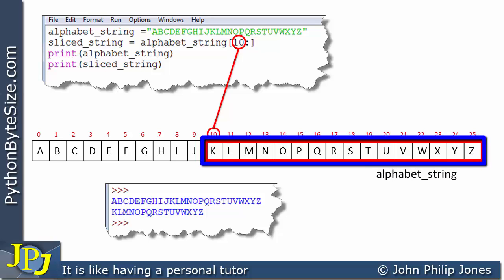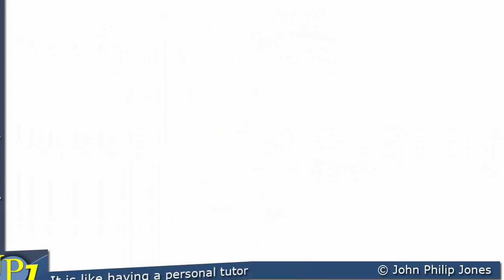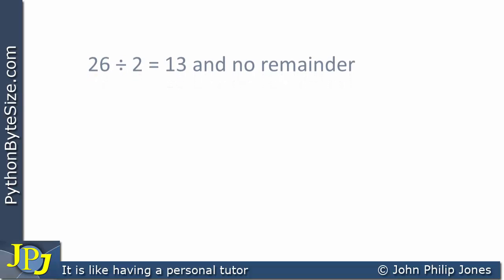Before looking at another example, I want to introduce two things we're going to use in a later program. If we take 26 and divide by 2, we know 2 goes into 26 exactly 13 times with no remainder. Another way of writing this is 26 divided by 2 equals 13.0.